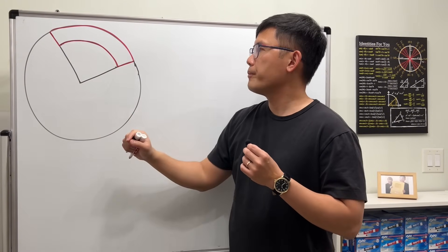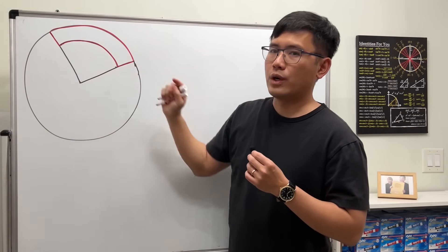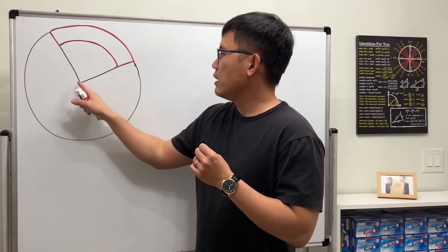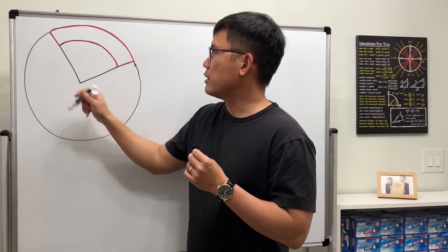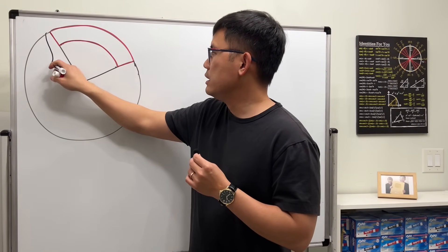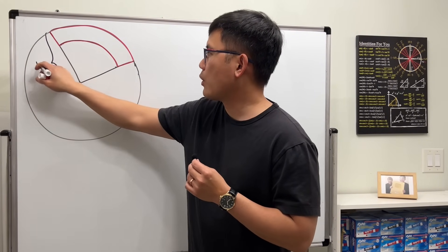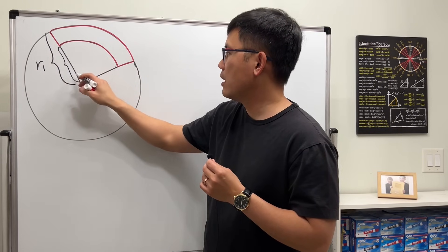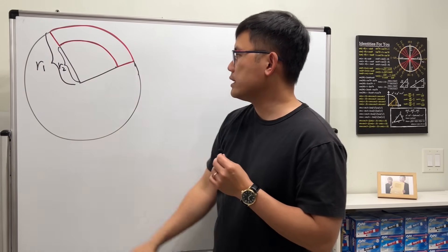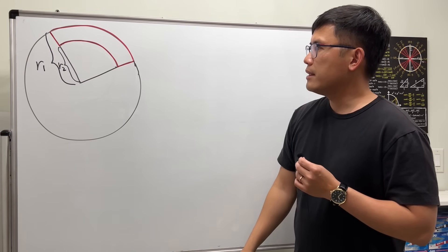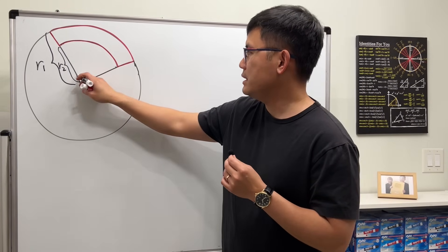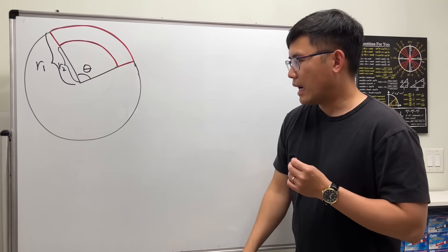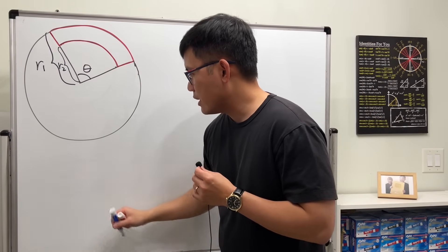This right here is the center of the circle, and we want to subtract the inner sector from the outer one. Let's do some labeling: this is the radius of the big circle, which I'll call r1, and this inner radius I'll call r2, so r1 is bigger than r2. I'm going to call this angle theta.